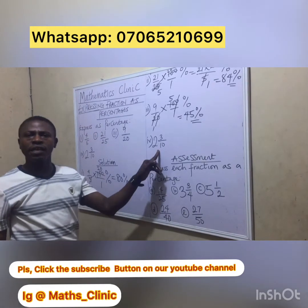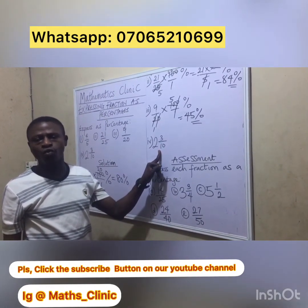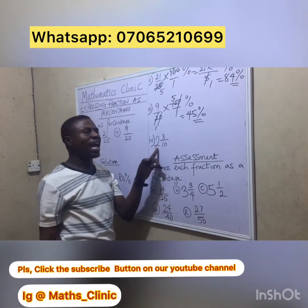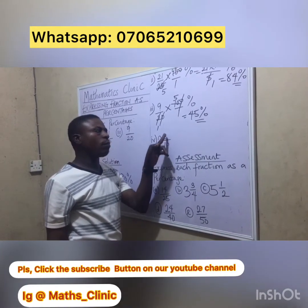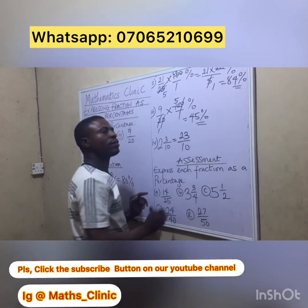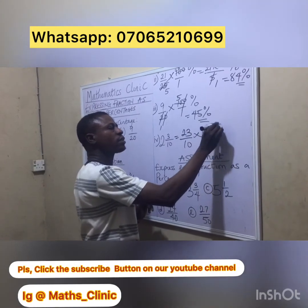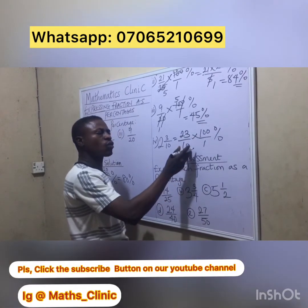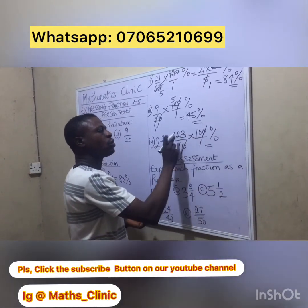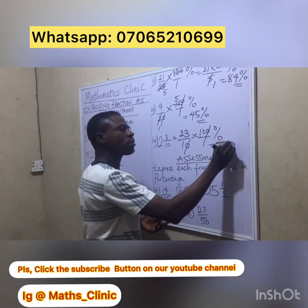This last one is a mixed fraction: 2 and 3 over 10. If you are asked to change it to percentage, first convert it to an improper fraction. 10 times 2 is 20, plus 3 the top number, gives 23 over 10. Then multiply by 100 over 1%. Cancel the zeros: 10 into 100 goes 10 times. So we have 23 times 10, which gives you 230%.